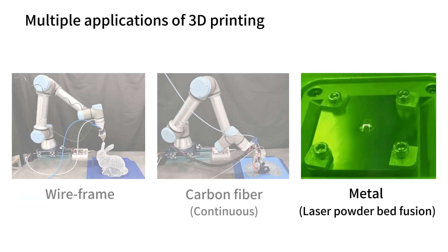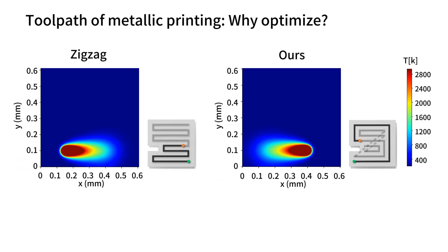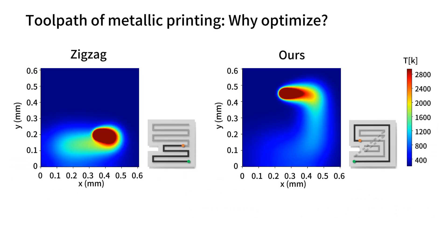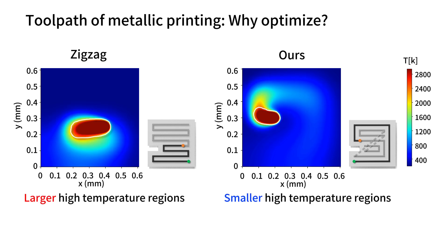We now show the process and results of metal printing. During the metal printing process, concentrated thermal stresses can lead to large melt pools, which will give large warpage on the printing results. Therefore, the goal is to reduce the area of the high temperature region during printing.